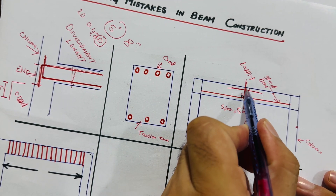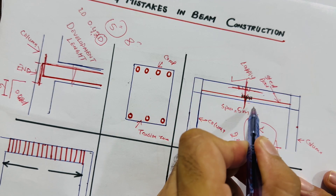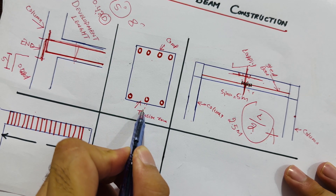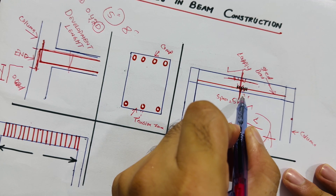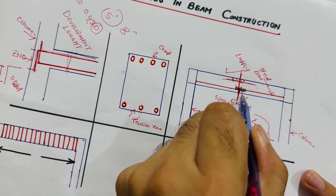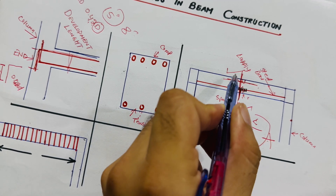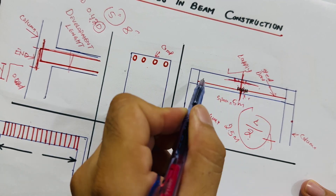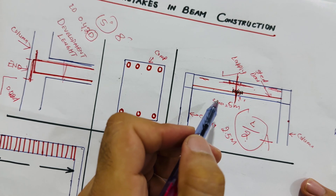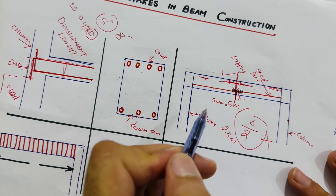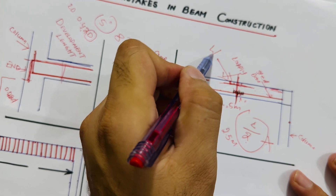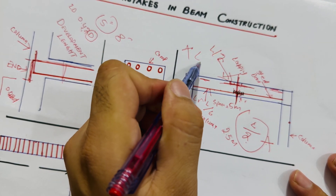If lapping is required at the upper portion, you can provide it at the middle. But at the bottom portion, you cannot provide lapping at mid-span because this is the tension zone with positive bending moment, creating high risk of bending failure. At the bottom, provide lapping only after L/4 from the support — meaning at L/6 or beyond. At the top, lapping at L/2 is acceptable.